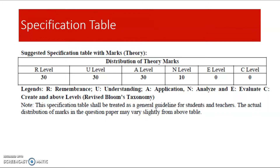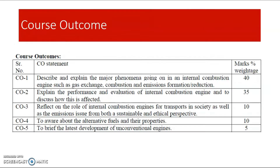The level of questions is given in this table, but GTU has also noted that this is a suggested distribution — it is not the actual distribution of marks in the question paper, so it may vary slightly. According to this, we have an idea of how to prepare and what kind of questions will appear. From the updated syllabus, the Course Outcome weightage is also given. There are five course outcomes with their weightages provided by GTU.